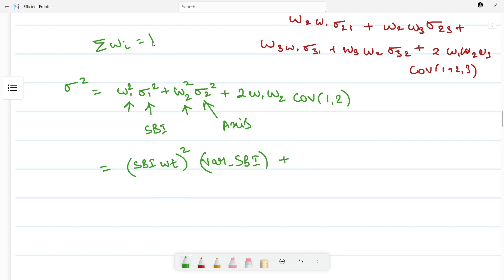Plus, since I said the weights are always equal to 1, we can just subtract this weight: (1 - W_SBI)² into variance of Axis Bank, plus 2 times W_SBI times (1 - W_SBI) into covariance between Axis and SBI.